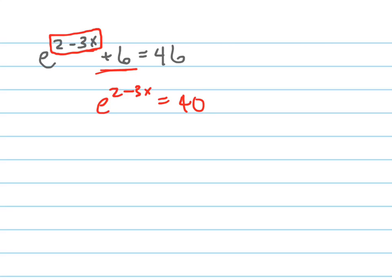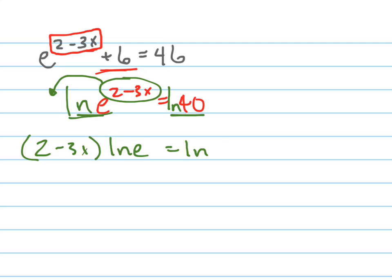Now I'm going to take the natural log of both sides. I'm taking the natural log because that allows me to bring down the exponent, so I get 2 minus 3x times the natural log of e equals the natural log of 40.